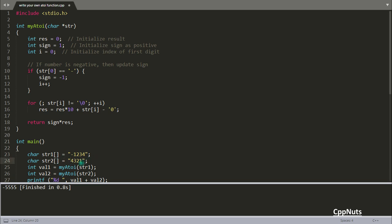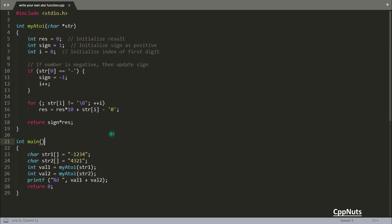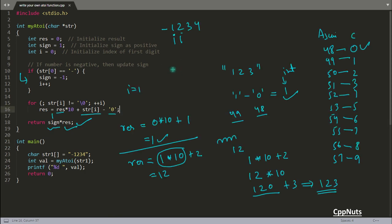If we are keeping this one as positive and this one as negative, the result would be 3087. So I think you got the point here. The main thing was just to remember: if you want to convert any character, like this is a character, if this is a character '1', you want to convert it into integer 1, just do this minus with '0'.